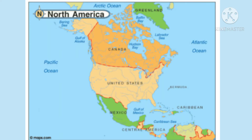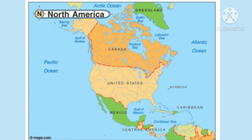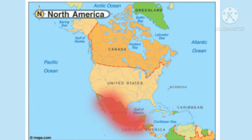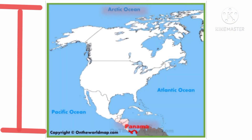This is the map of North America continent. It consists of three countries: Canada, United States, and Mexico. North America extends from the Arctic Ocean in the north to Panama in the south.